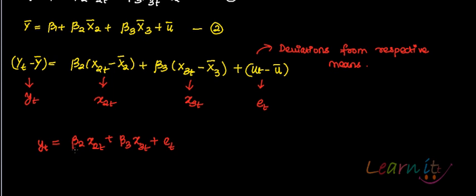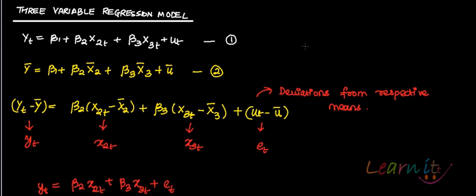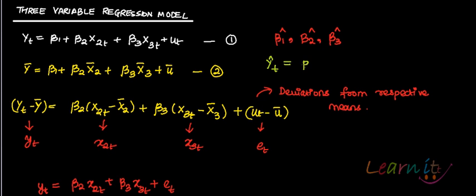Now suppose you want to estimate the first equation by OLS. You estimate this equation by OLS and you can get the estimates for beta 1 hat, beta 2 hat, and beta 3 hat. You can also get an estimate for the dependent variable: y hat t equals to beta 1 hat plus beta 2 hat x2t plus beta 3 hat x3t.